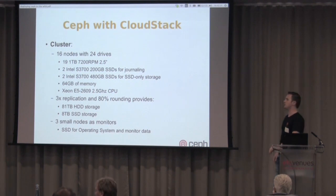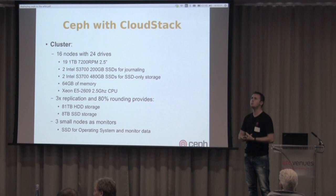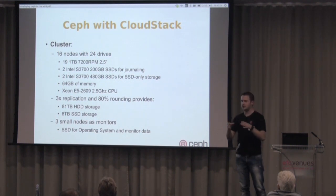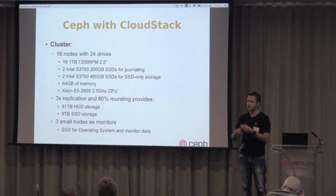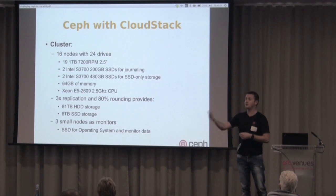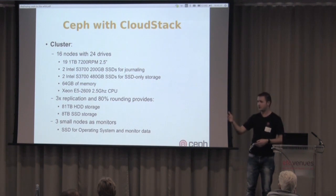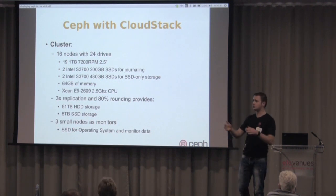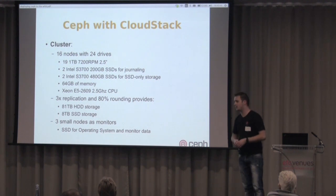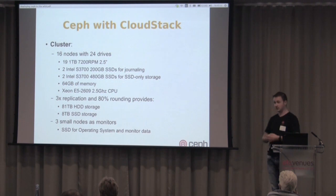Data is split into placement groups by the CRUSH algorithm. Each OSD periodically sends its PG statistics to the monitors. If you have a lot of placement groups, monitors get a lot of information. Adding more monitors allows load balancing of PG statistics — the system does this automatically. It's a simple process: if monitors get overloaded, add more without downtime and the system scales out. You're probably looking at needing more than three monitors when you hit 10 to 15 petabytes.